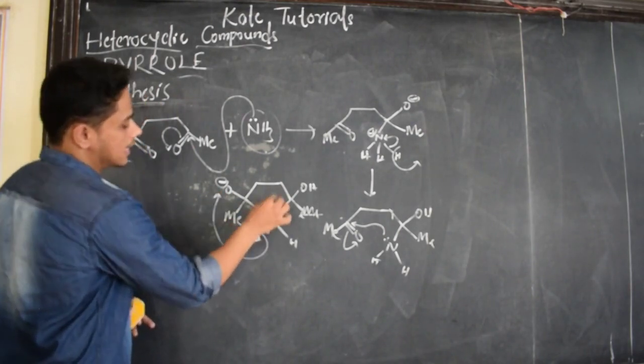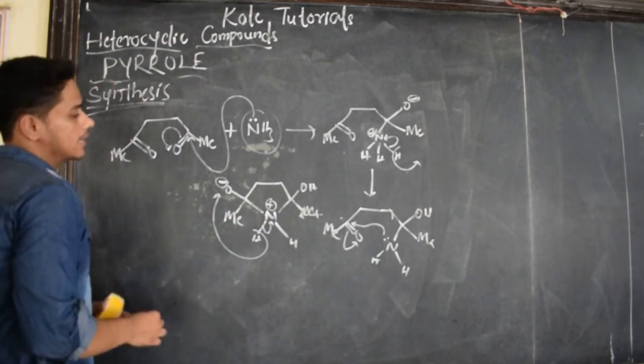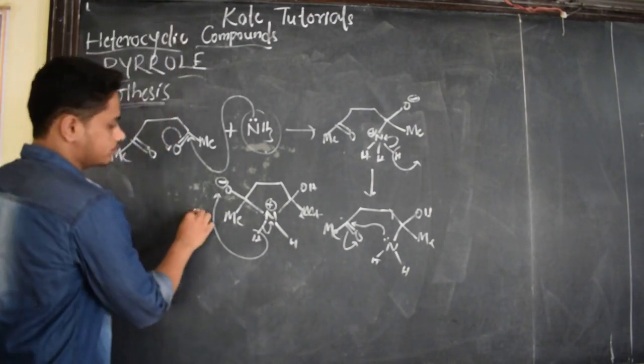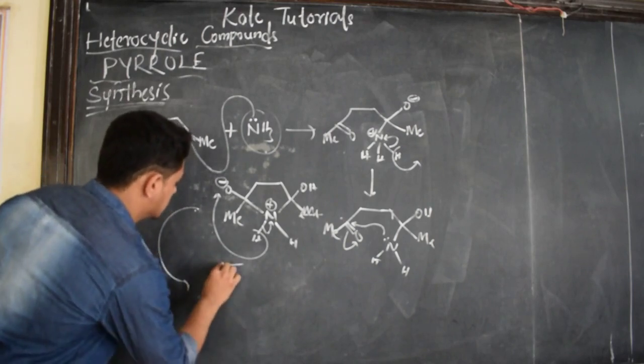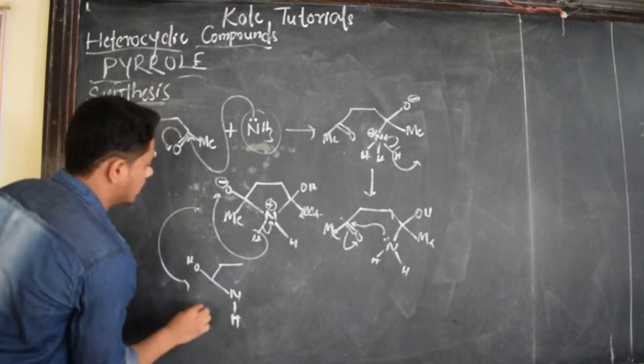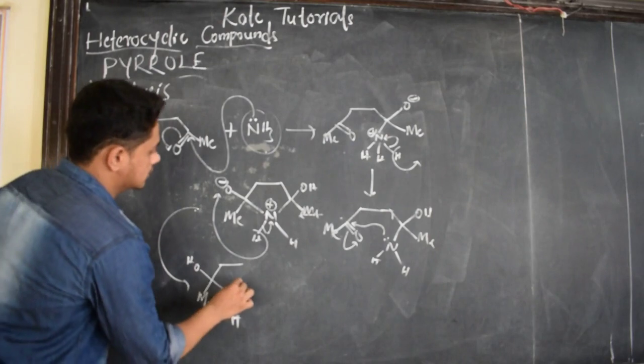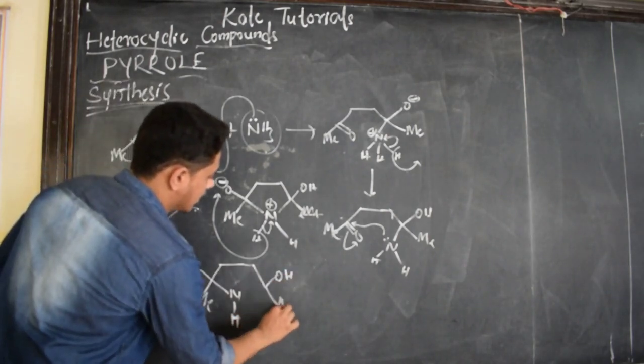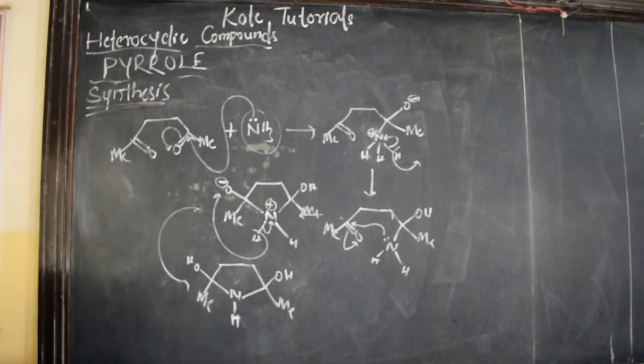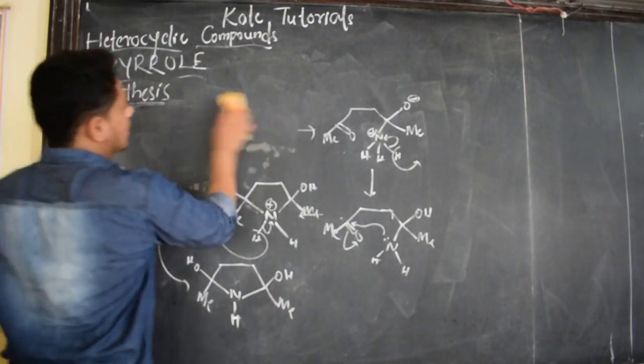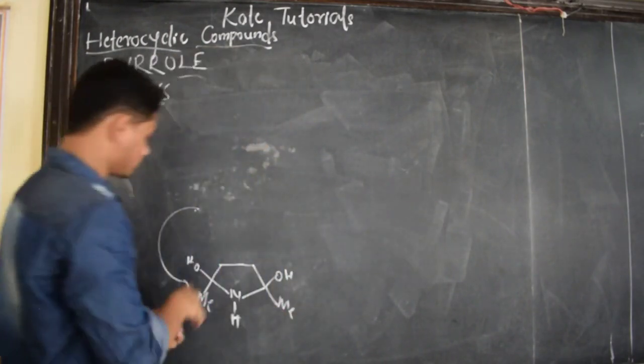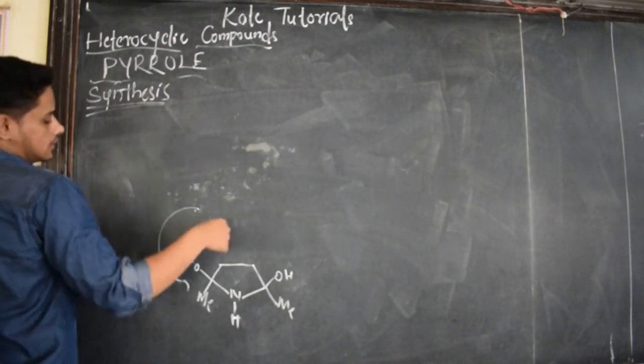It again loses this proton and this electron shifts towards nitrogen. So it again becomes neutral. And my compound will be, let me write here. My compound will be like this. Nitrogen became H. And here I have OH. Here I have Me. And here I got OH. Still I have Me. And this is bonding. This is the compound which we got. Next, I have to rub because I am not getting enough space. So this compound we got. I hope you have written the reaction.